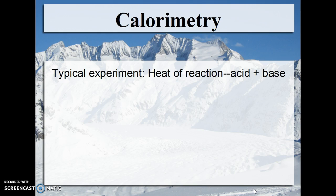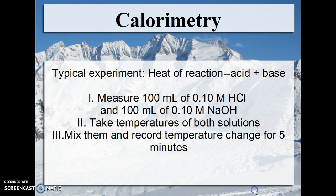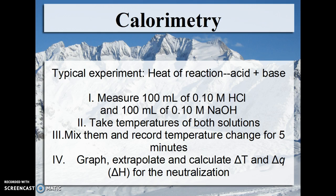A typical experiment: we can measure the heat of reaction of an acid-base reaction. You measure 100 milliliters of 0.1 molar hydrochloric acid and 100 milliliters of 0.1 molar sodium hydroxide, mix them together and see what the temperature change is. We would record this temperature change for about five minutes, then graph and extrapolate to calculate delta T (change in temperature) and delta Q or delta H for the neutralization. Delta Q is the change in heat in the water — that change is going to be a positive temperature change. But the reactants are actually losing energy to the water, so delta H would be negative.